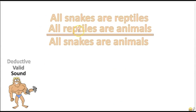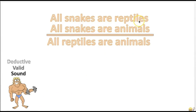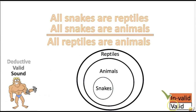Practice problem: 'All snakes are reptiles. All reptiles are animals. Therefore, all snakes are animals.' Is this valid or invalid? The answer is valid. If you assume snakes are in the reptiles group and reptiles are in the animals group, then snakes would also be in the animals group. Next: 'All snakes are reptiles. All snakes are animals. Therefore, all reptiles are animals.' The answer is invalid — the reptiles are not necessarily all inside the animals group, so the conclusion doesn't follow.